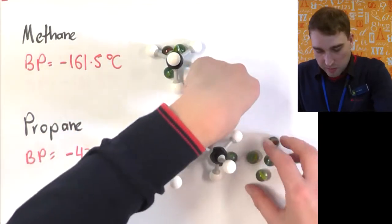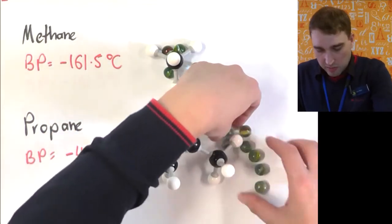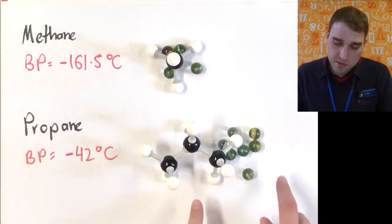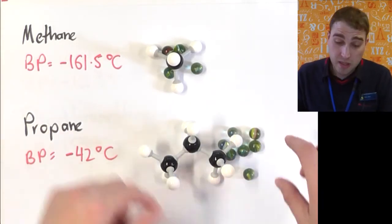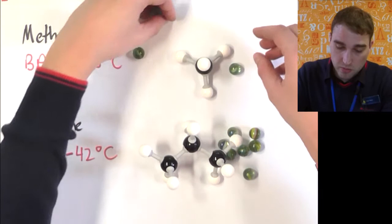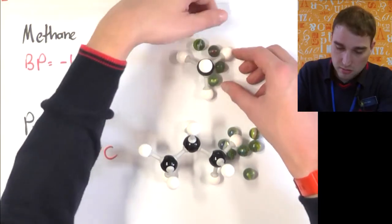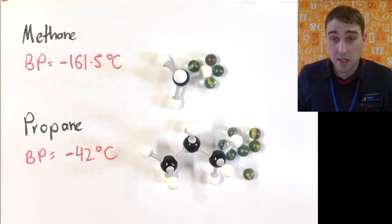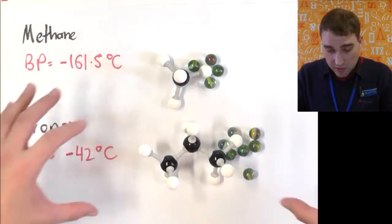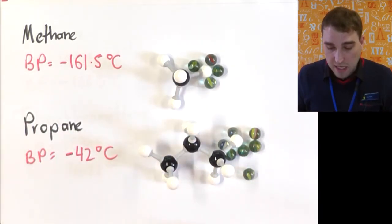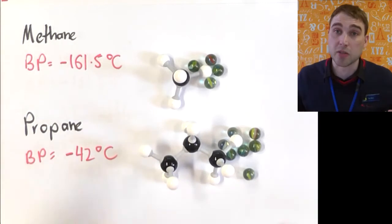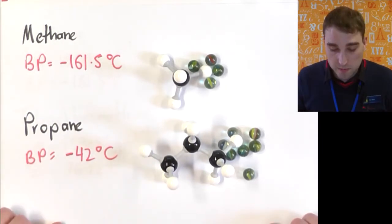If we've got more electrons and they pull down one end of the molecule, we've got a stronger partial negative charge because we've got more electrons over here. Whereas in methane, if they all pull down this side of the molecule, we've got a much smaller number of electrons pulling down that side. So as you get more and more atoms, and the atoms get heavier and heavier, you increase the strength of the dispersion forces, so it requires more energy to separate out the molecules. And that increases the boiling point.